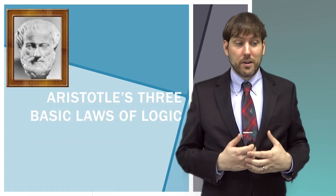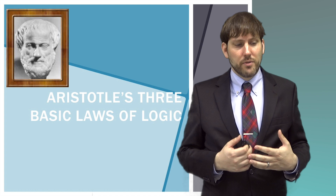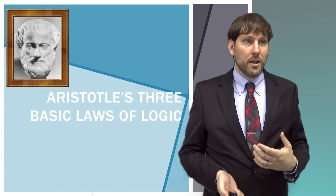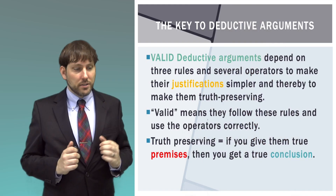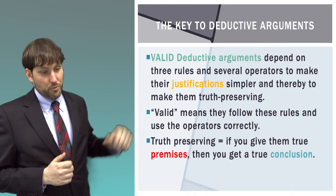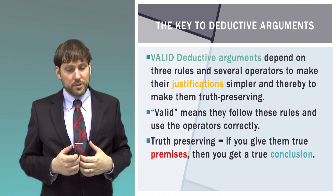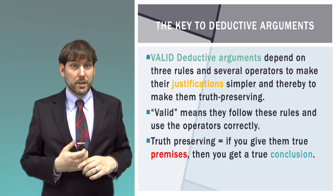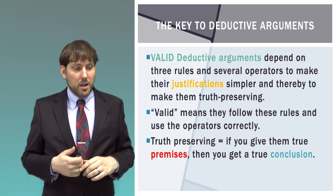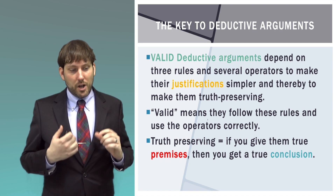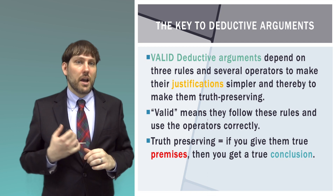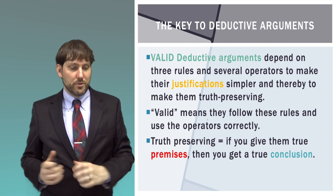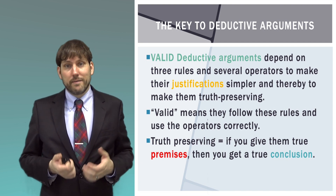Now we're going to look at something very old: Aristotle's three laws of logic, which will help us understand how deductive arguments work. Valid deductive arguments depend on these three rules and several operators to make their justification. An operator is similar to the plus or minus sign in math — for example, in 'three plus two,' the plus is an operator. Through these rules and simple operators, we will see how to make an argument that is truth-preserving: if the premises are true, the conclusion must be true. If it follows these rules, we call it valid.